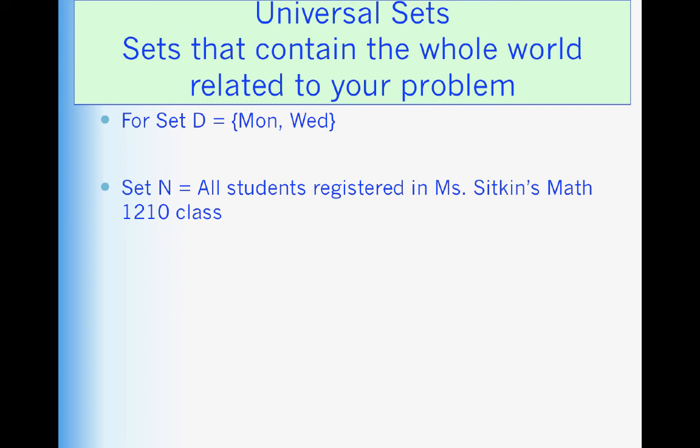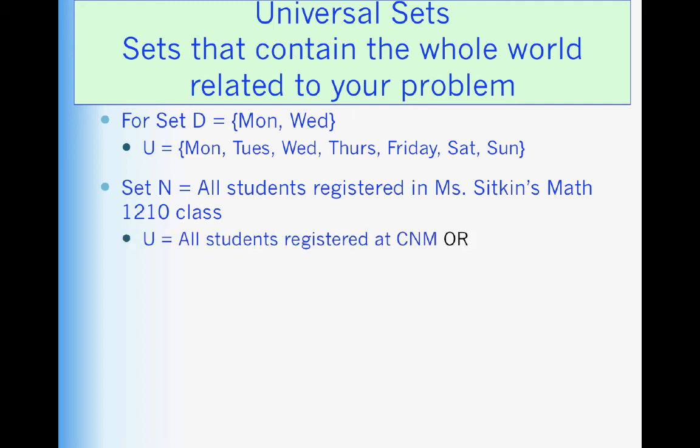Universal sets. A universal set you can think of as the world that contains your problem. All sets have universal sets. Set D is a set consisting of Monday and Wednesday. So the world that contains those items could be all the days in the week. So I could say that the universal set is all the days in the week.